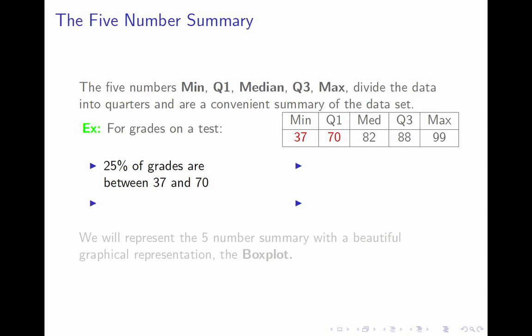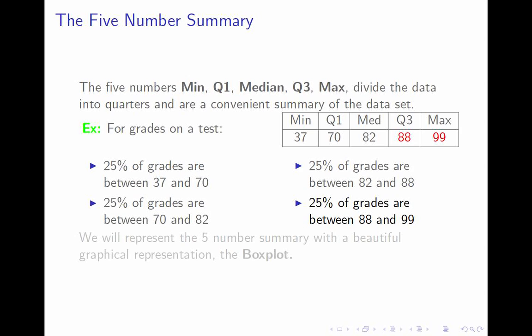So how would that tell you how people did on this score? Well, you'd know that one quarter of the class got between 37 and 70. The next quarter of the class, that would be the worst quarter of the class, the next quarter of the class got between 70 and 82. The third quarter of the class got between 82 and 88, and the highest scoring 25 percent got between 88 and 99.